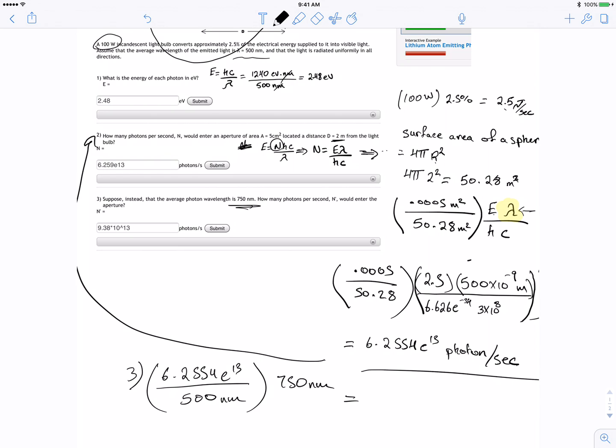And here I got 9.38 times 10 to the 13 photons per second. So that's interesting. The more wavelengths, the more photons we got.